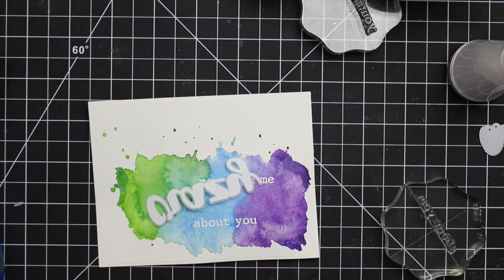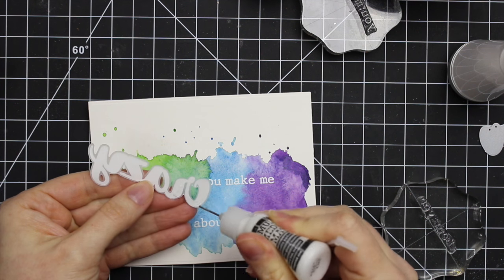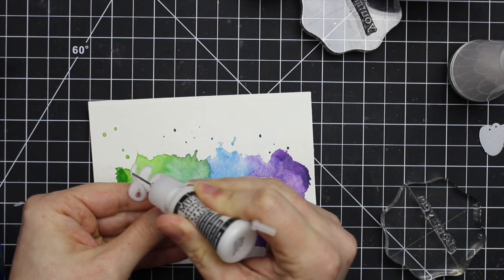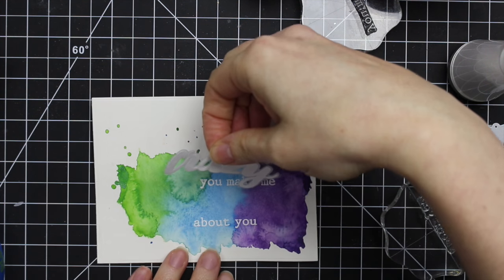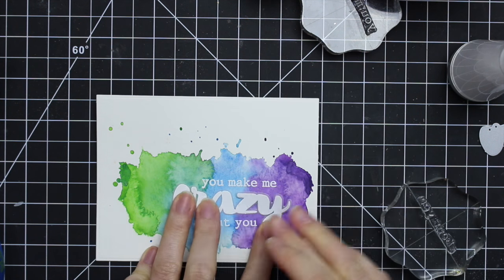And then to adhere this die cut, this was really easy to adhere since the letters are so thick. I just applied the same multimedia matte adhesive right behind the embossing, making sure it wasn't going to ooze out around cause you'd see it through the vellum. And then line that up between the two sentiments that I had already stamped and embossed.